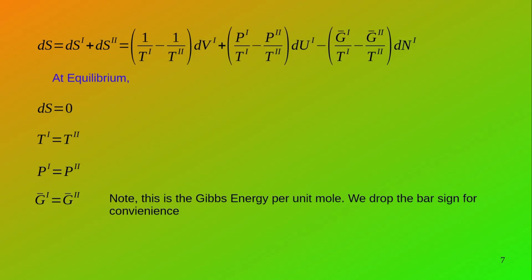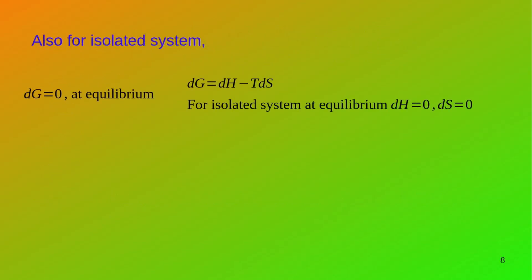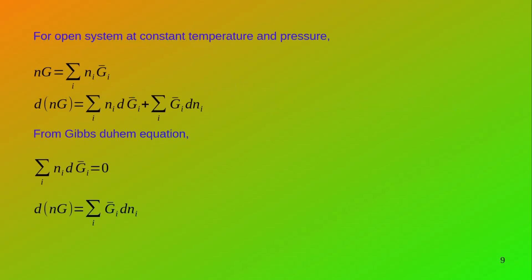For convenience, we drop the bar sign in the next slide. Also, for an isolated system at equilibrium, dG = 0. This naturally follows because dG = dH − T dS. For an isolated system at equilibrium, dS = 0 and dH = 0, therefore dG = 0. For an open system at constant temperature and pressure, the total Gibbs free energy is the summation of the Gibbs free energies of individual components.